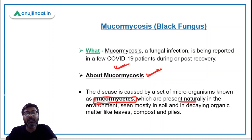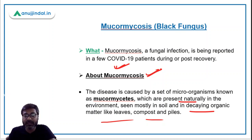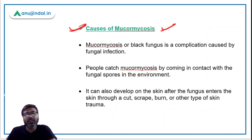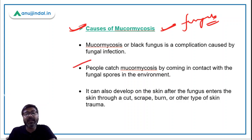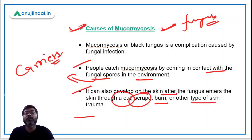Mucormycetes can be seen mostly in soil and decaying organic matter. People contract this disease by coming in contact with fungal spores in the environment — the fungal spores are the carriers of that fungus. It can also develop on the skin after the fungus enters through a cut, a scrape, a burn, or other types of skin injury.